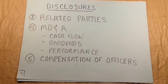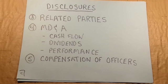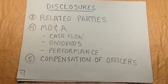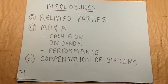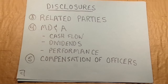Related parties is a big disclosure that will be very different for different companies. Here we talk about whether the company president or other key officers have separate companies that do business with the company. For example, the Connor Company might be owned by Bill Connor, and Bill Connor also has Bill's Investments, which owns the building Connor operates in. If Bill's Investments is charging Connor Corporation a lease to use its building, we'd disclose the terms of that lease in the related parties note.